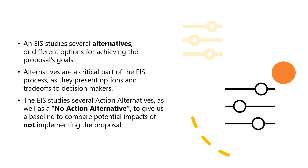An EIS studies several alternatives, or different options, for achieving the proposal's goals. Alternatives are a critical part of the EIS process as they present options and trade-offs to decision makers. The EIS studies several action alternatives as well as a no-action alternative, to give a baseline to compare the potential impacts of not implementing the proposal.